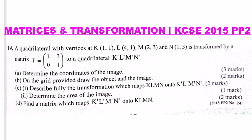Part A: determine the coordinates of the image (3 marks). Part B: on the grid provided, draw the object and the image (2 marks). Part C part 1: describe fully the transformation which maps K, L, M, N onto the image (2 marks). Part C part 2: determine the area of the image (1 mark). Part D: find the matrix which maps K', L', M', N' onto the object K, L, M, N.